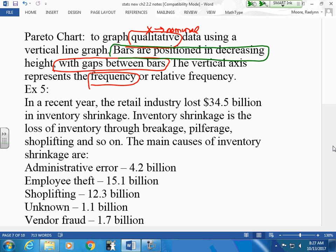The y-axis is generally your frequency. The most important part is that your bars are positioned in decreasing order from highest to lowest. So what does that do for somebody? It makes their eyes look at that graph. Here is a retail industry. They've been losing billions of dollars. They lost $34.5 billion in inventory shrinkage. They want to address the one that's causing that loss, don't they? So if we make this graph, here's the employee theft. That's the biggest one. Then shoplifting, skip a space.